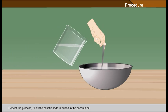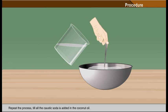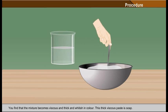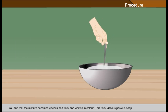Repeat the process till all the caustic soda is added in the coconut oil. You find that the mixture becomes viscous and thick and whitish in colour. This thick viscous paste is soap.